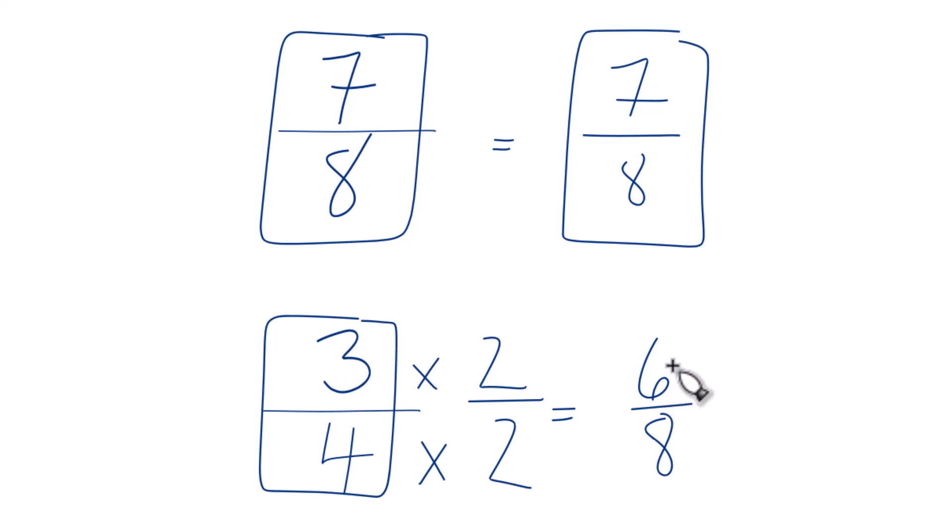So that's it. That's how you tell which is bigger, 7 eighths or 3 fourths. The answer? 7 eighths. Thanks for watching.